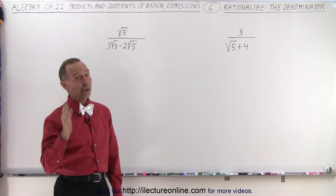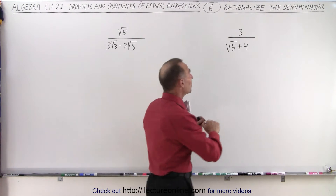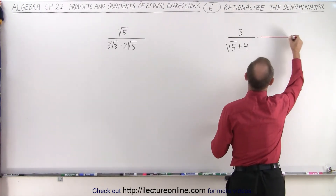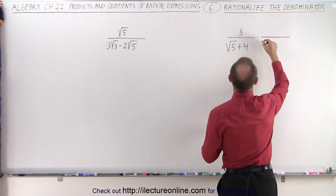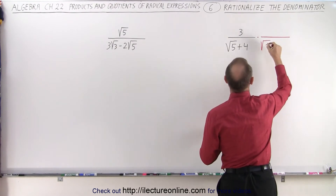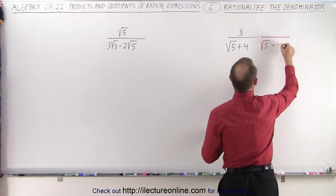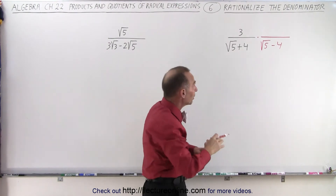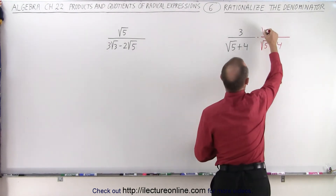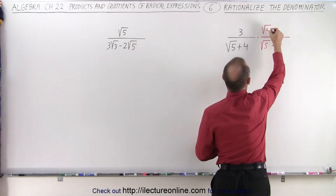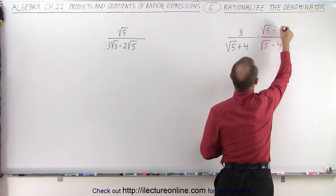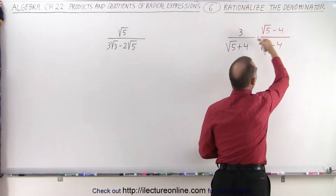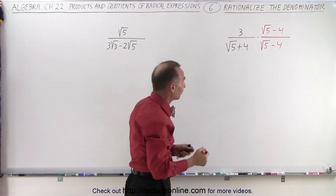By now we know what the conjugate is. So we're going to multiply both the numerator and the denominator by the conjugate, which is going to be the square root of 5 minus 4. Of course, whatever we multiply the denominator with, we must do exactly the same with the numerator. So we multiply by the square root of 5 minus 4. Notice that this is equal to 1, so we haven't really changed anything.